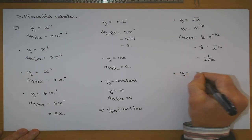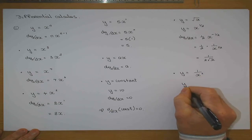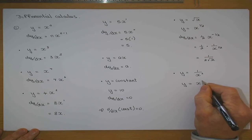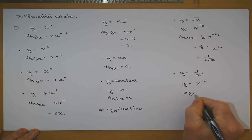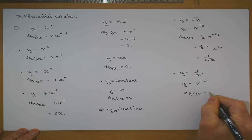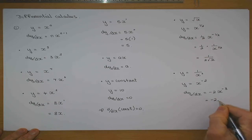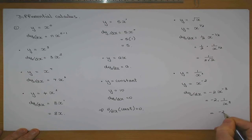If y was equal to 1 over x squared, that would be like saying y is equal to x to the power of minus 2. So therefore dy/dx is equal to minus 2 times x to the power of minus 3, which is minus 2 over x cubed.